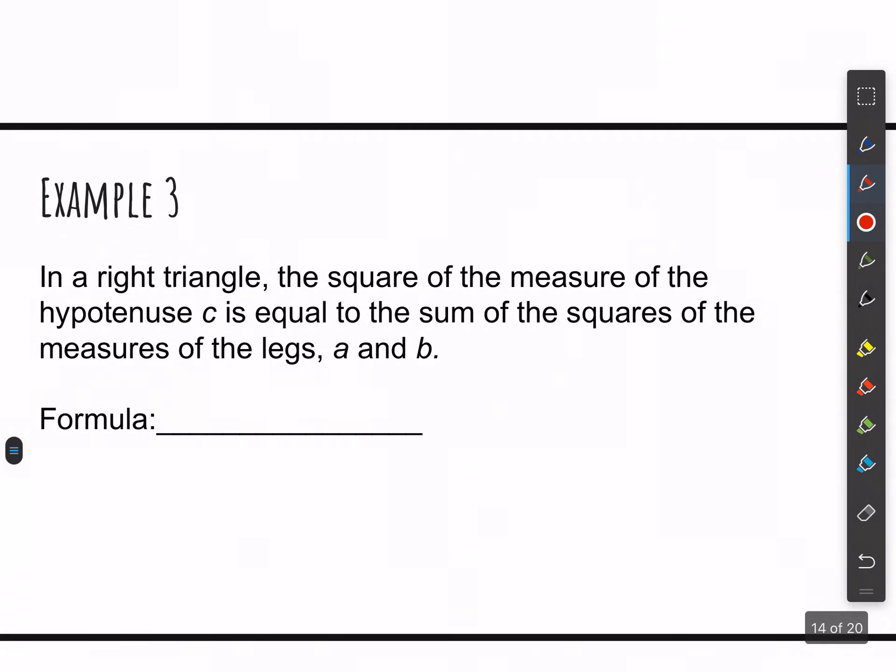Example three. In a right triangle, the square of the measure of the hypotenuse C, the square of that, is equal to, equals, the sum of the squares of the measures of the legs, A and B. So we'll call them A squared. These are squares, plus B squared. This is a very famous theorem called the Pythagorean theorem. We use a ton in geometry next year. So C is always your hypotenuse. And then A and B can be interchanged, but they are the legs of your triangle. This is the right triangle, the right angle in your triangle. And this says that this squared plus this squared always equals this squared. So that's example three.